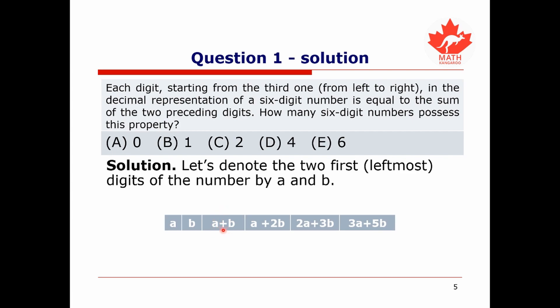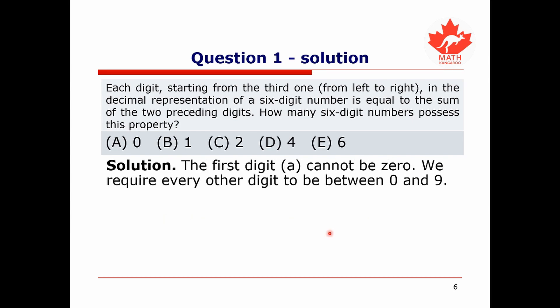We call the first digit A and the second digit B. Then the third digit is A plus B, the fourth digit is A plus 2B, the fifth digit is 2A plus 3B, and the sixth digit is 3A plus 5B. Note that the first digit A cannot be 0, because if the leftmost digit were 0, it would not actually be a six-digit number.